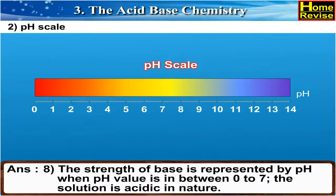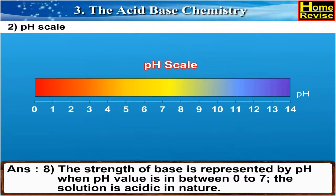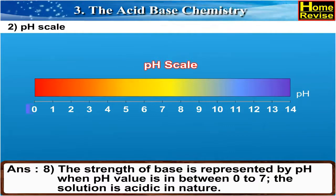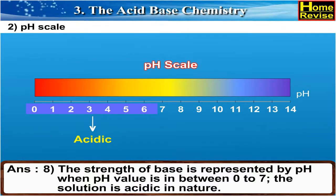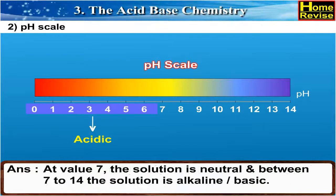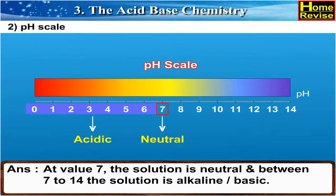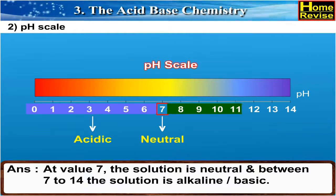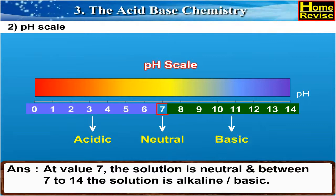The strength of base is represented by pH. When pH value is between 0 to 7, the solution is acidic in nature. At value 7, the solution is neutral. And between 7 to 14, the solution is alkaline or basic.